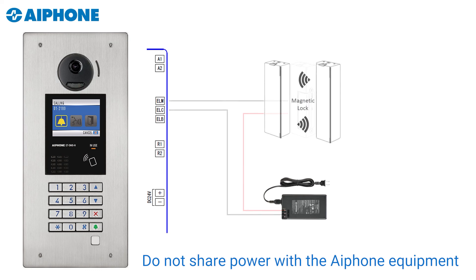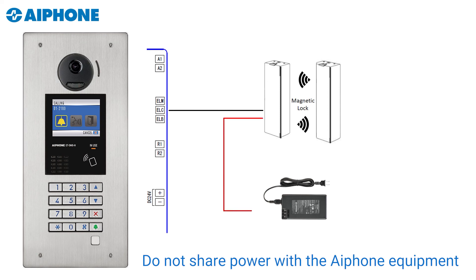Now let's hook up a mag lock, using ELC and ELB. Take a wire from ELC on the back of the door station to one side of your mag lock. The other side of the mag lock goes to your power supply — again, use a third-party power supply and do not share power with the A phone system. The other side of the power supply goes to ELB. This creates a closed circuit, meaning electricity is always running through ELC, the mag lock, and ELB, so the mag lock is always energized and the door is locked. The only way to unlock the door is when a tenant presses the key button, which breaks the circuit, cuts off electricity to the mag lock, and allows someone to enter the building.